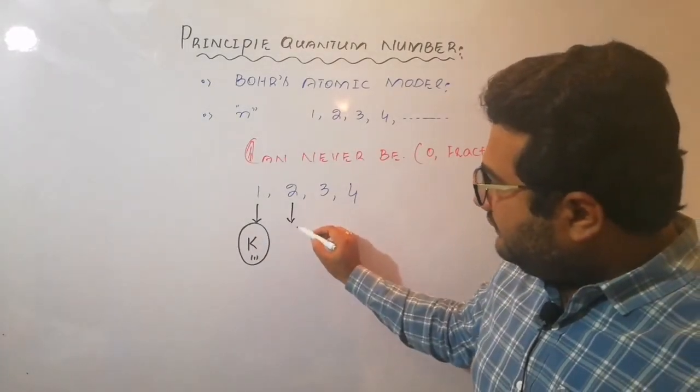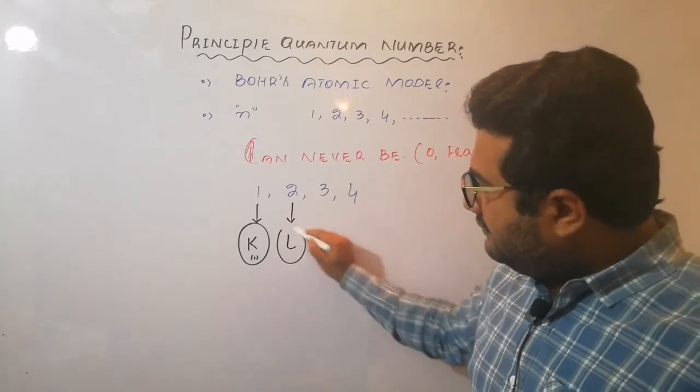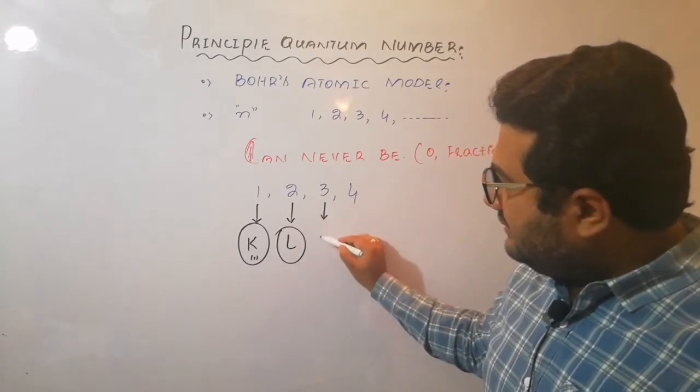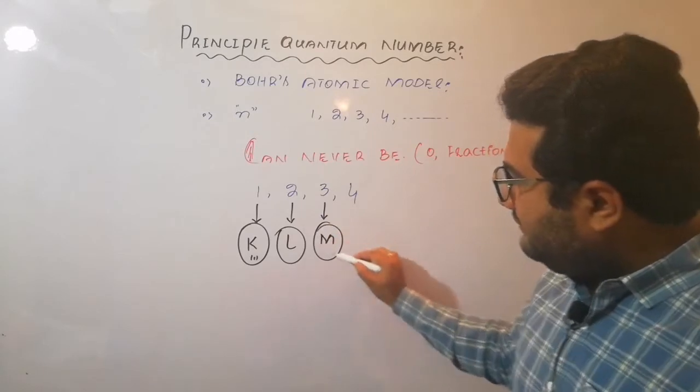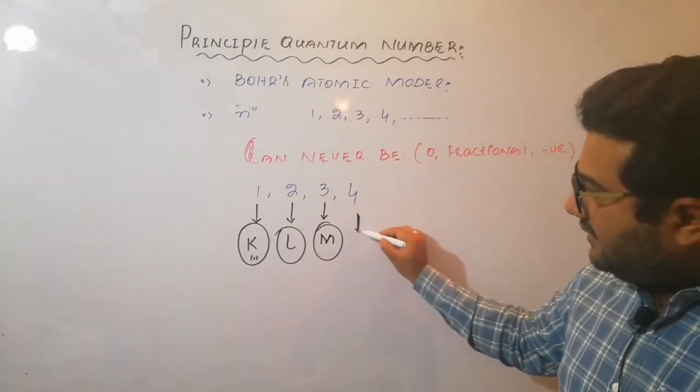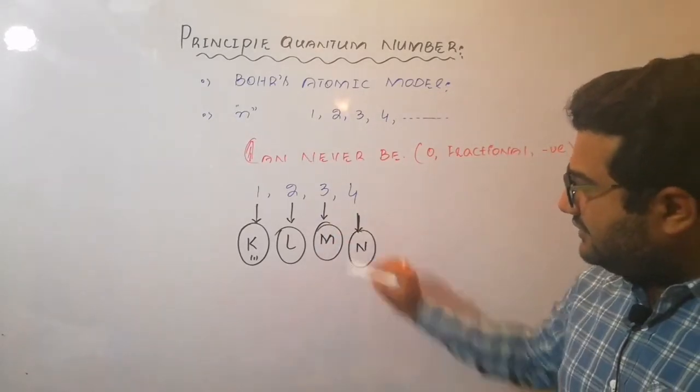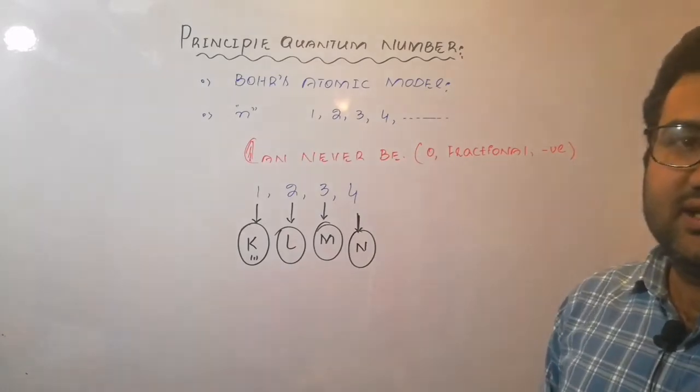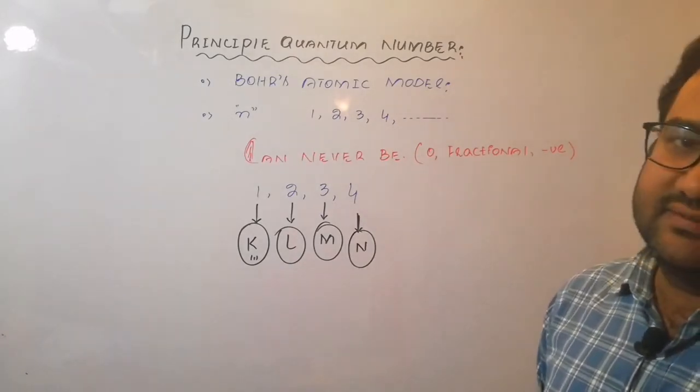When the value of n is 2, that is L shell. If it is 3, M. And if it is 4, it shows it is N shell or N orbit or N principal energy level.